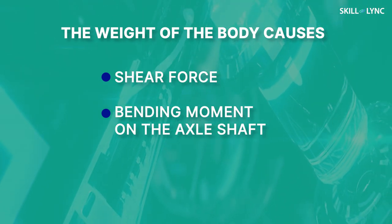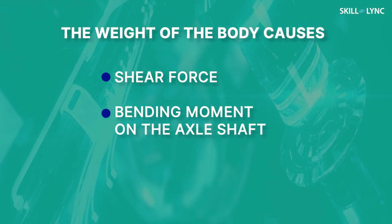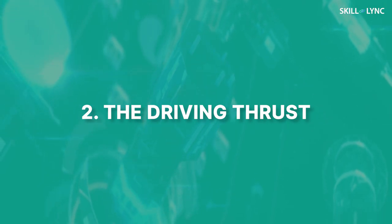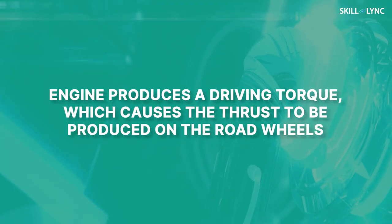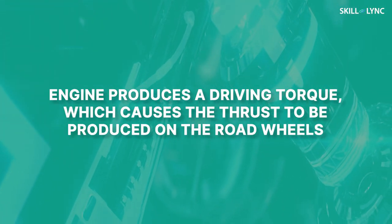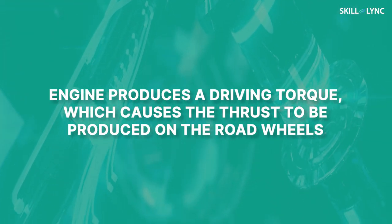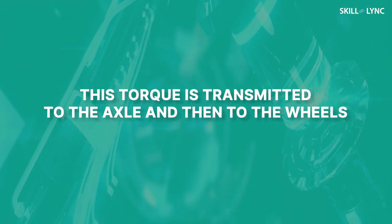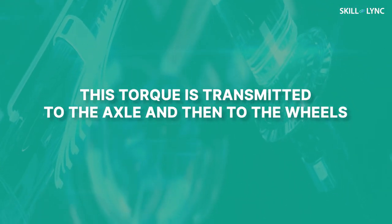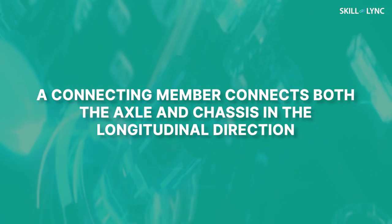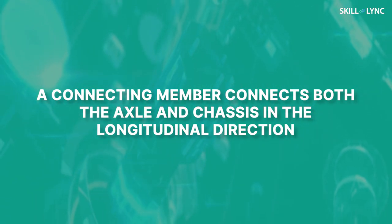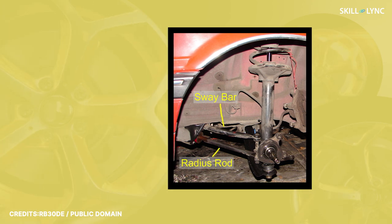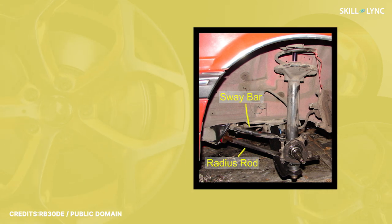The weight of the body causes both shear force and bending moment on the axle shaft. The next one is driving thrust. The engine produces a driving torque due to which a thrust is produced on the road wheels. This torque is transmitted to the axle and then to the wheels. A connecting member connects both the axle and chassis in the longitudinal direction. This member is called a thrust member or a radius rod.